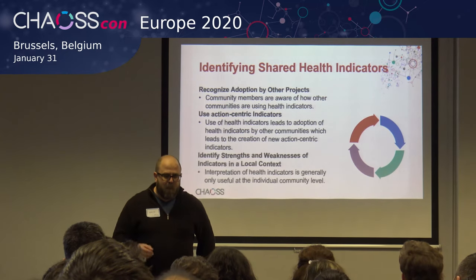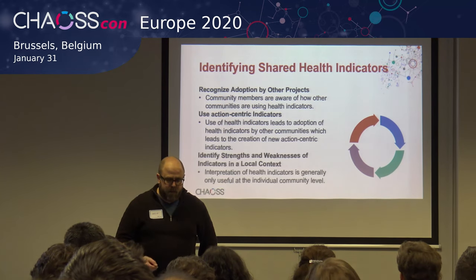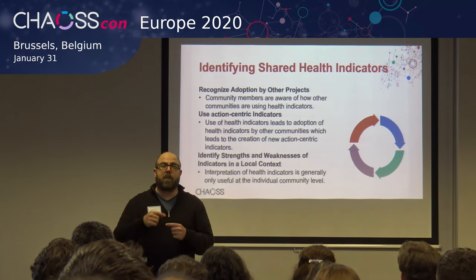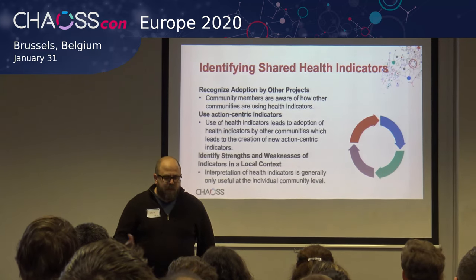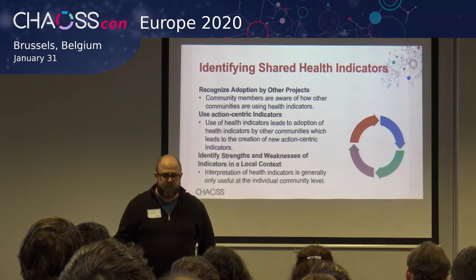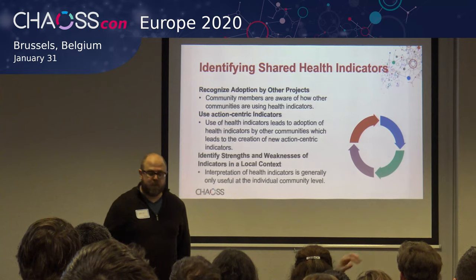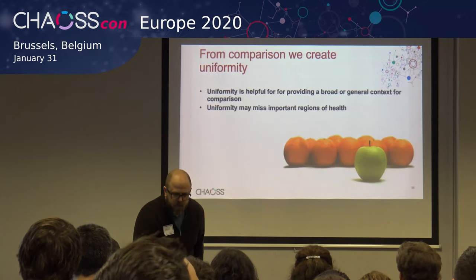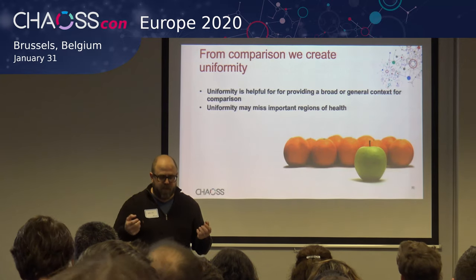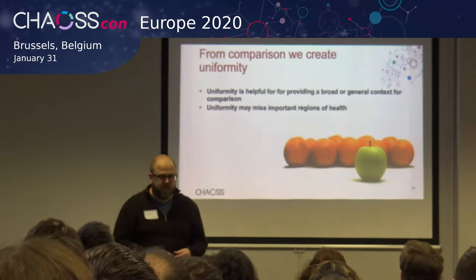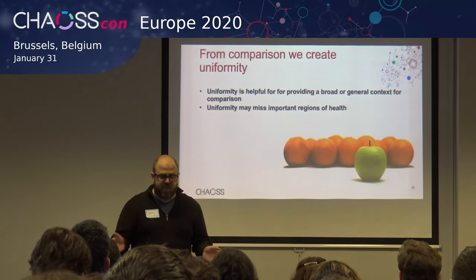Through this comparison, community members become aware of how other communities are using health metrics. This awareness leads to adoption. The adoption of health metrics actually leads to a process of creation and adoption that's iterative — it just builds on itself. But while we start to adopt similar health metrics, the interpretation of these health metrics remains a community or organizational issue. We can only interpret it at our community level. By identifying and defining health metrics, we're actually creating some uniformity in the way that we make these comparisons. We do this by identifying health metrics that may work for a broad set of communities — ones that may be transferable across several communities.